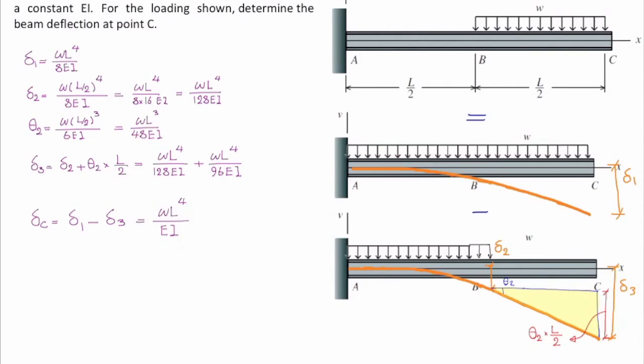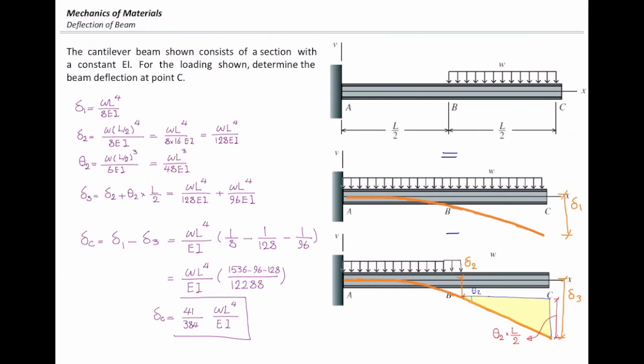So let's plug the values. I picked out WL to the 4th over EI and write down 1 over 8th for the first equation, and 1 over 128, and 1 over 96. And that simplifies to this equation. And overall, delta C at that point would be 41 over 384 times WL to the 4th over EI. And that's the answer of this problem. Good question.